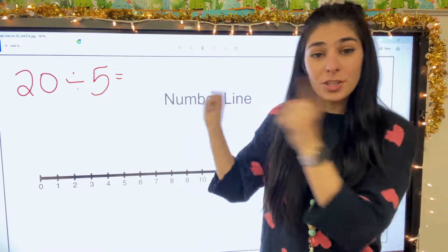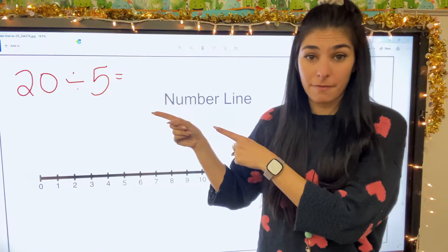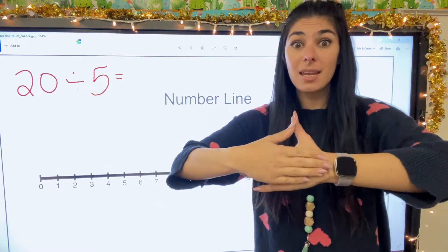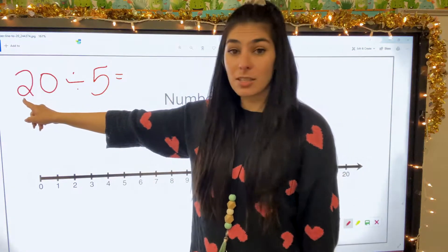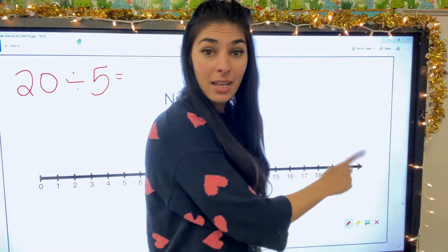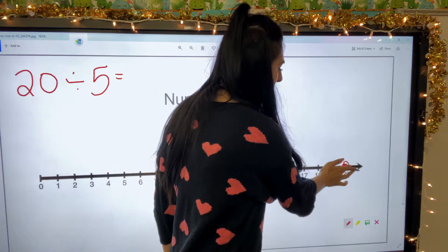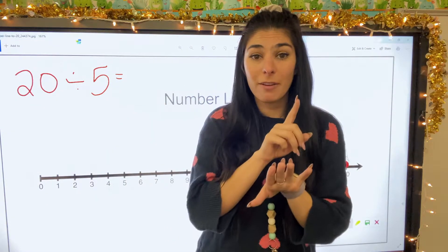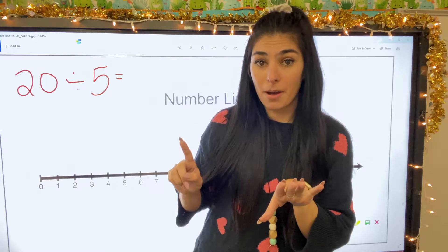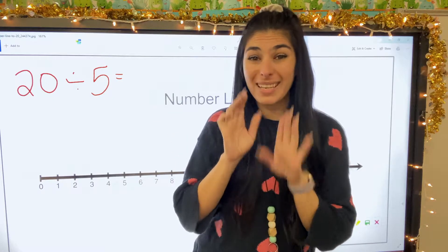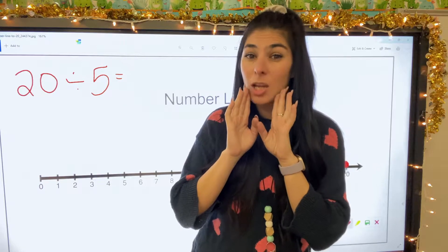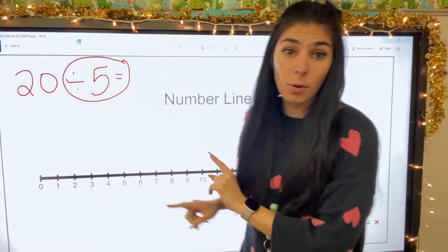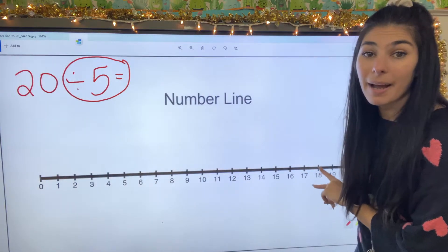Let's get to the first equation. So the first equation is 20 divided by five. First thing, I'm going to look at my dividend. My dividend is my big number, so my dividend is 20. So I'm going to start at 20 right here. Next, we are dividing by five, and this means that I'm going to be doing five little jumps along the bottom.